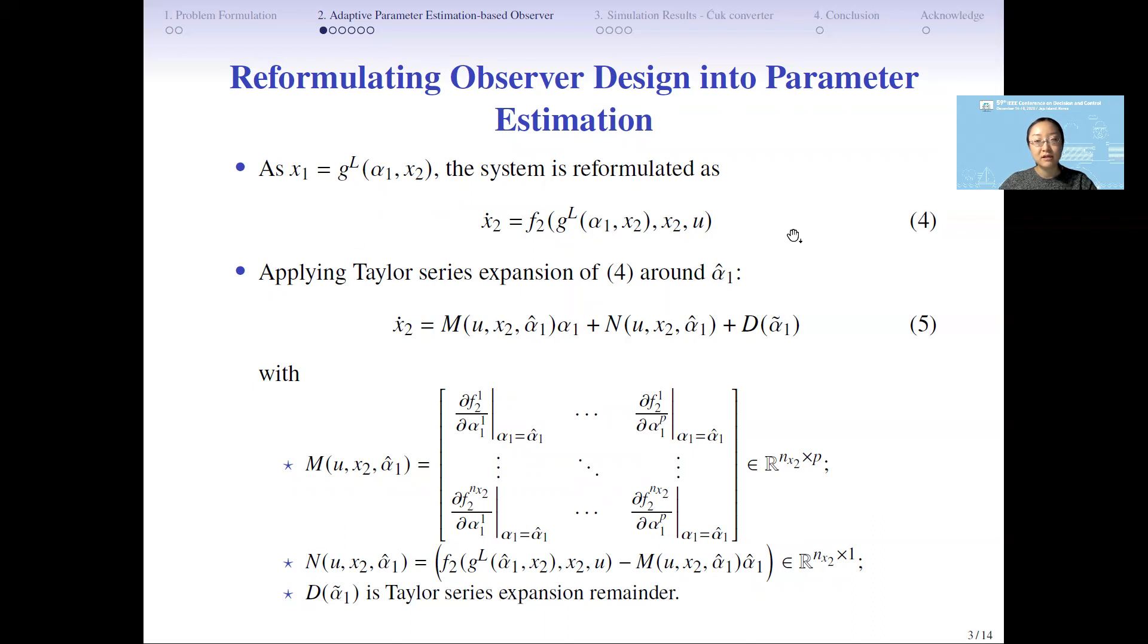However, many estimation methods cannot directly be used because of the function f2. In order to linearize the function f2, we apply the Taylor expansion around alpha-1 hat. After reformulation, we could get equation 5.